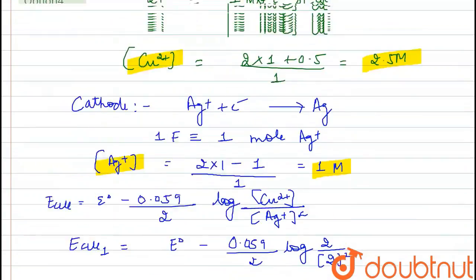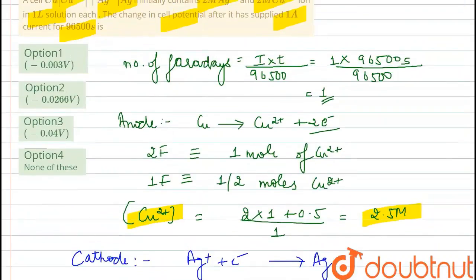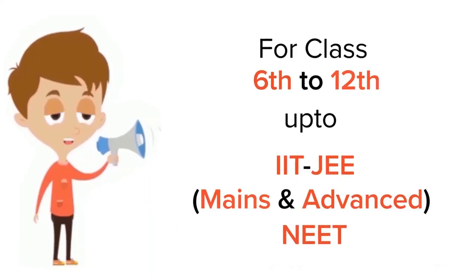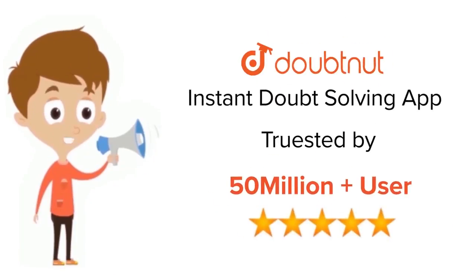The value comes out to be −0.02 V, which is closest to option number 2. So this is the correct answer to the question.